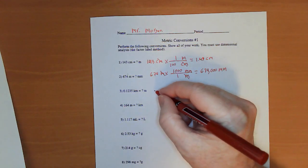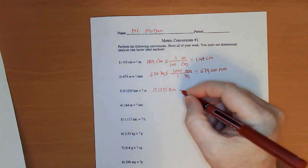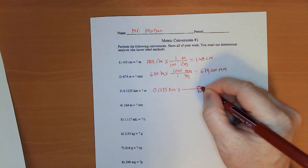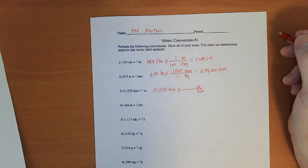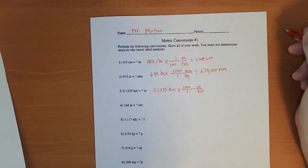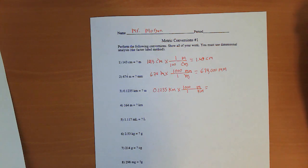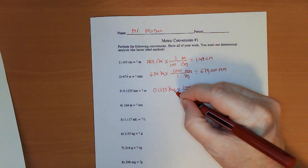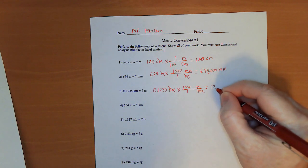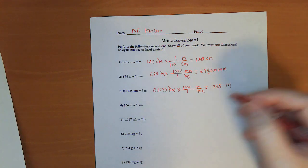Now, 0.1235 kilometers times. I'm going to put kilometers on the bottom because that's what I want to get rid of. I'm going to put meters on the top. There are 1,000 meters in a kilometer. Most of my cross-country people, track people, know that conversion rule well. Kilometer cancels kilometer. And I have 123.5 meters.